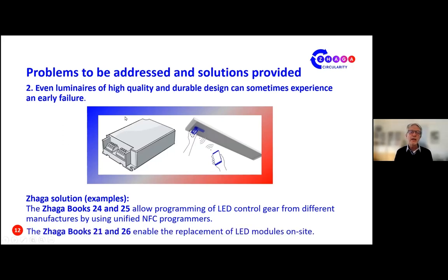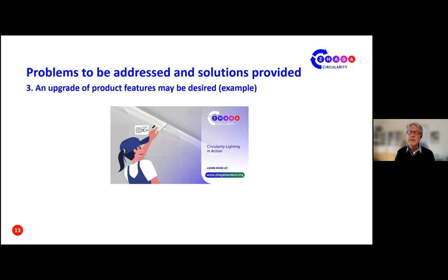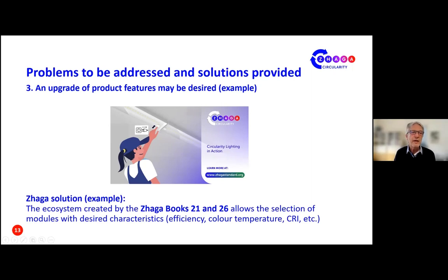A second problem area is that electronic products are subject to a statistical risk of failure. Even high-quality and durable control gears, LED modules, or lighting control devices can fail at some point. For outdoor luminaires in particular, it makes sense to be able to replace defective electronic components, not only in terms of material efficiency but also from an economic perspective. Saga Books 24 and 25 enable contactless programming of replaced control gears using uniform NFC readers, even on site. Furthermore, the replacement of defective LED modules is supported by the specifications of Books 21 and 26. There are also many situations where it may be desired to adapt or upgrade product properties — for example, a different color temperature due to changed use, or a more efficient modern LED module. The ecosystem created by Saga Books 21 and 26 allows selection of modules with desired characteristics such as efficiency, color temperature, or CRI.